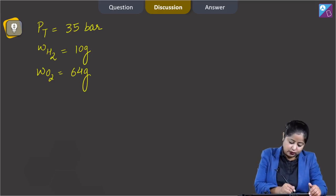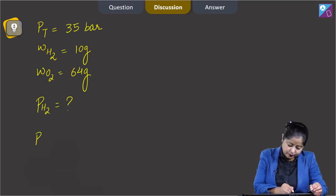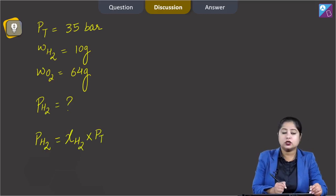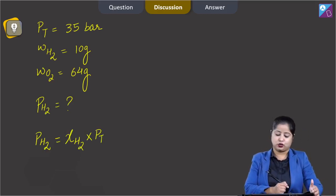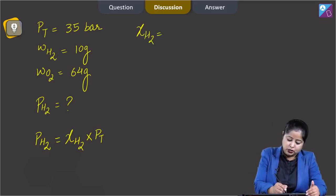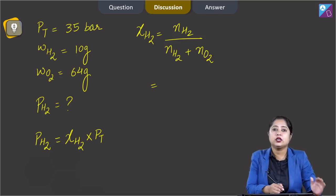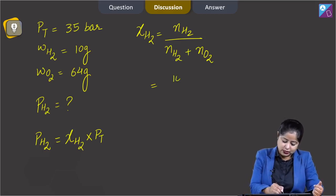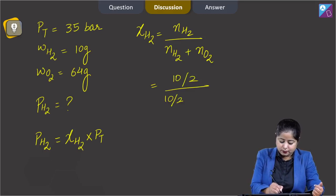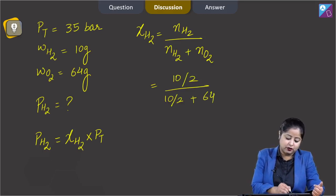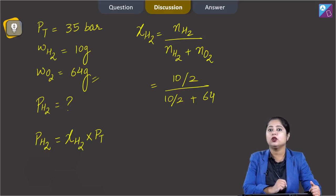We have to calculate the partial pressure of H2 using the formula: partial pressure of H2 = mole fraction of H2 × total pressure. Mole fraction of H2 = moles of H2 / (moles of H2 + moles of O2). Moles of H2 = 10/2 = 5, and moles of O2 = 64/32 = 2. So mole fraction of H2 = 5 / (5 + 2) = 5/7.